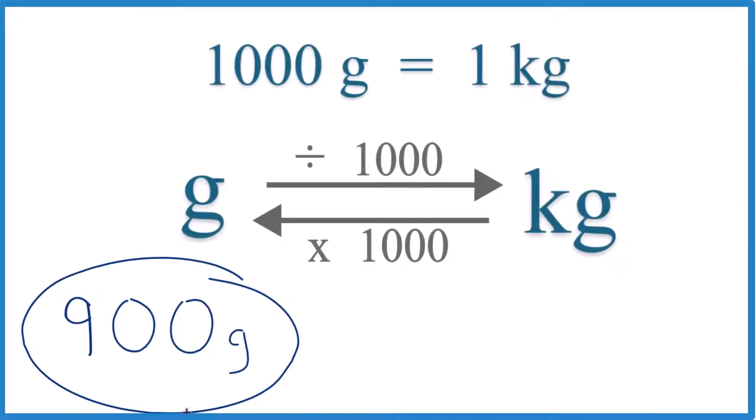Let's convert 900 grams to kilograms. Here's how we can do it. You need to memorize that 1,000 grams equals 1 kilogram. So 1,000 grams is equal to 1 kilogram, and that's our conversion factor.